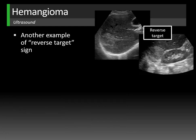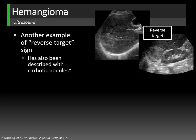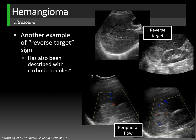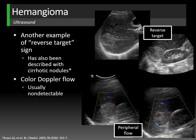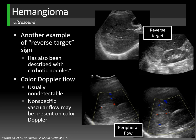Here's another example of the reverse target appearance — echogenic periphery and centrally isoechoic or hypoechoic. Hemangiomas can be a little heterogeneous as well. The reverse target appearance is not specific for hemangioma; case reports describe it with cirrhotic nodules and benign multifocal nodular steatosis, and rarely with malignancy. Occasionally peripheral color Doppler flow may be seen in hemangiomas — this nonspecific vascular flow should not dissuade you from a diagnosis of hemangioma.